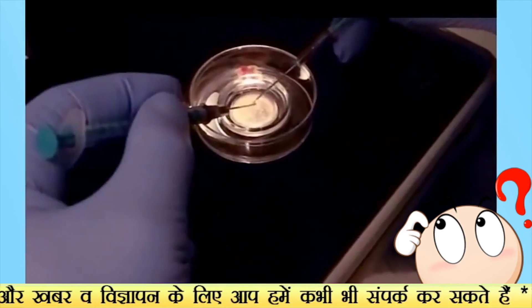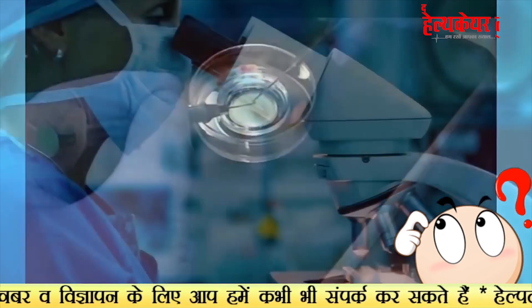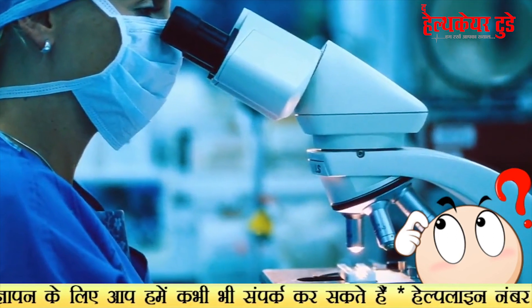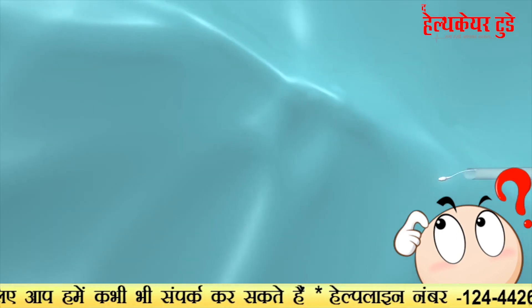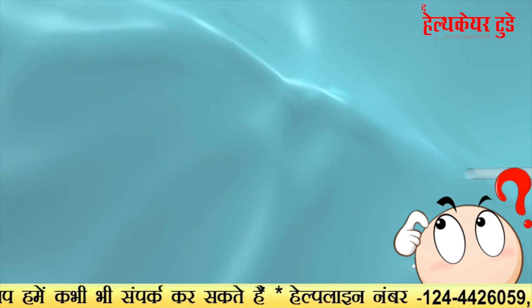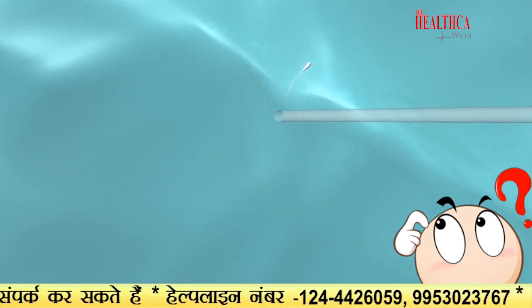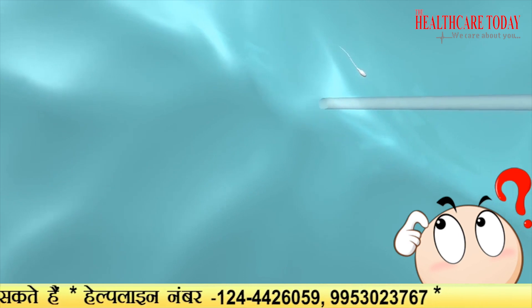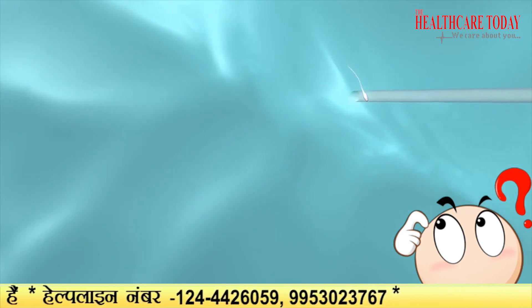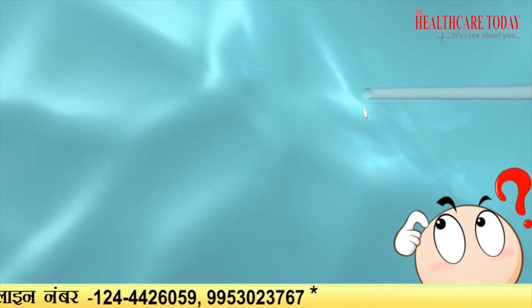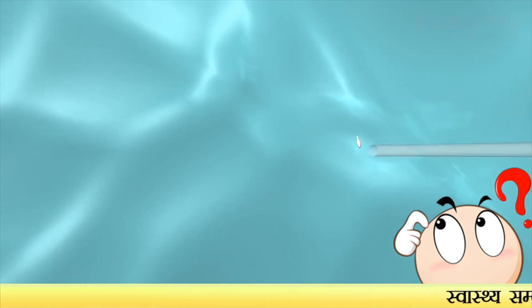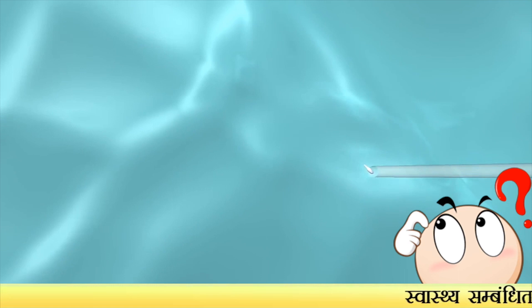Secondly, we go ahead with TESE. In TESE, we make an incision in the area and try to hunt for sperm in the testicular tissue. The tissue is extracted out as a TESE sample and given to an embryologist, who processes it and searches for the sperms.